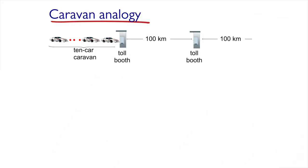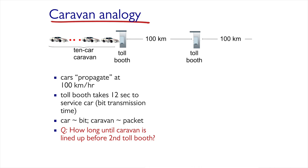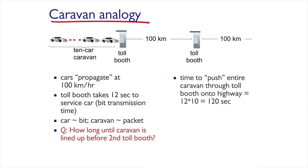In order to explain how routers work in terms of queue management, we'll use an analogy to the transportation problem called the caravan analogy. Let's say every bit is represented by a car, and every packet is a caravan containing ten cars — that is, the size of the message is ten bits. The cars travel at 100 km per hour. Every router is represented by a toll booth which delays every car for ten seconds. The distance to the next toll booth is 100 km. This calculation includes ten cars times twelve seconds of processing in the first toll booth, giving us 120 seconds.